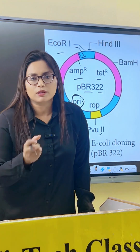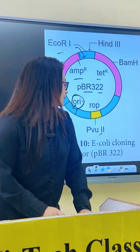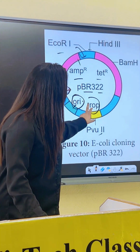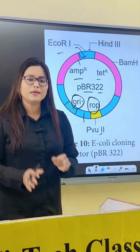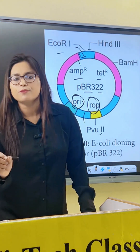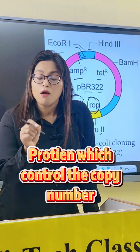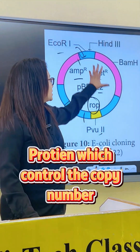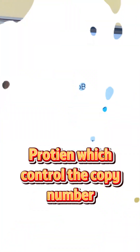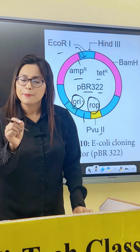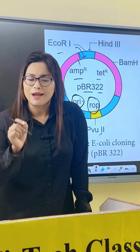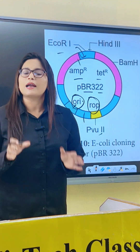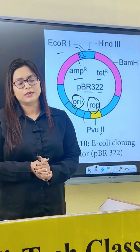The next feature is the ROP gene, which encodes a protein that controls the copy number of this plasmid. These are the main properties of the vector, and these vectors are highly used in recombinant DNA technology.